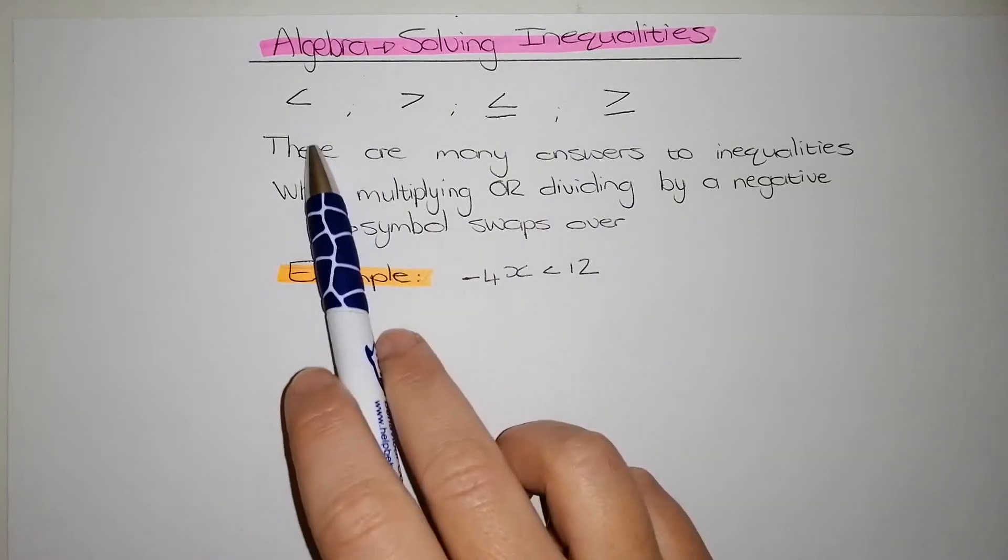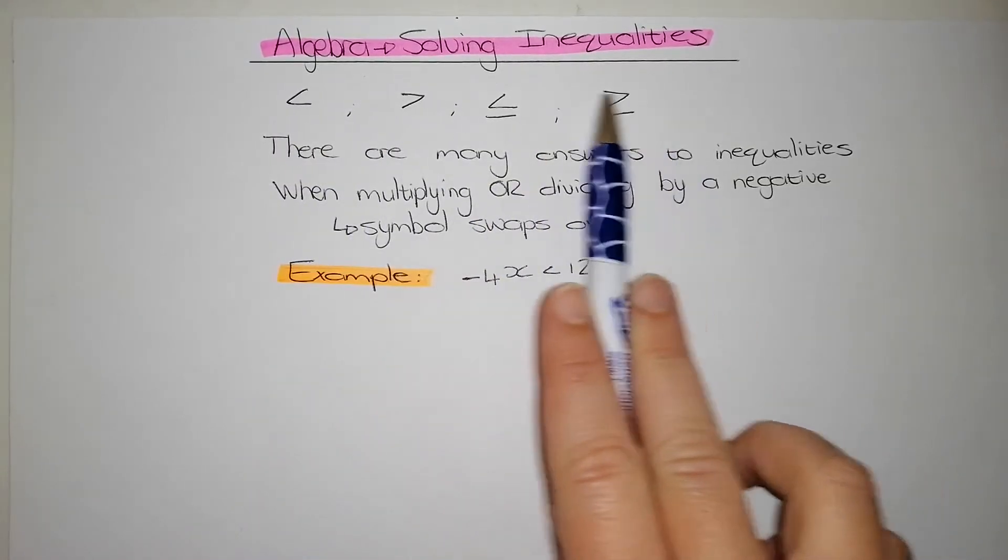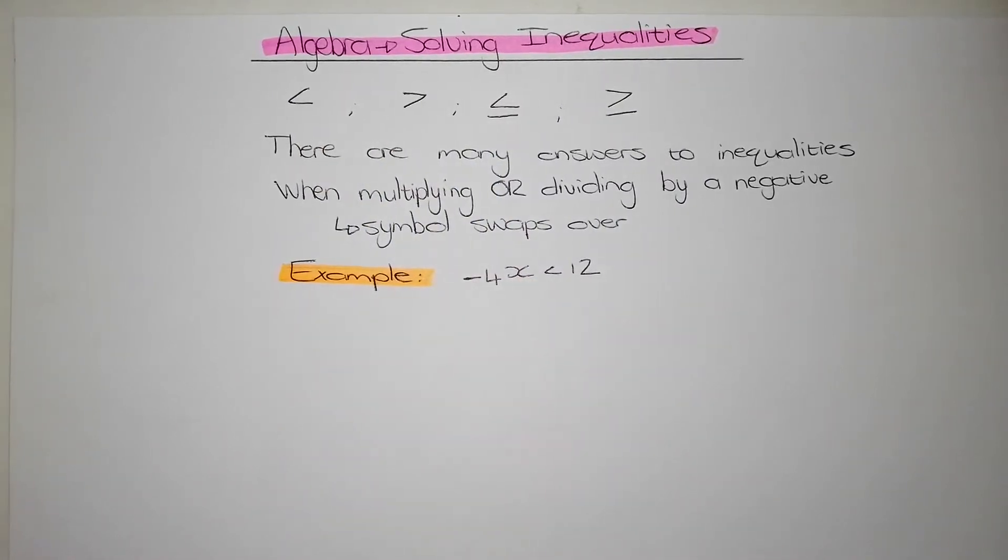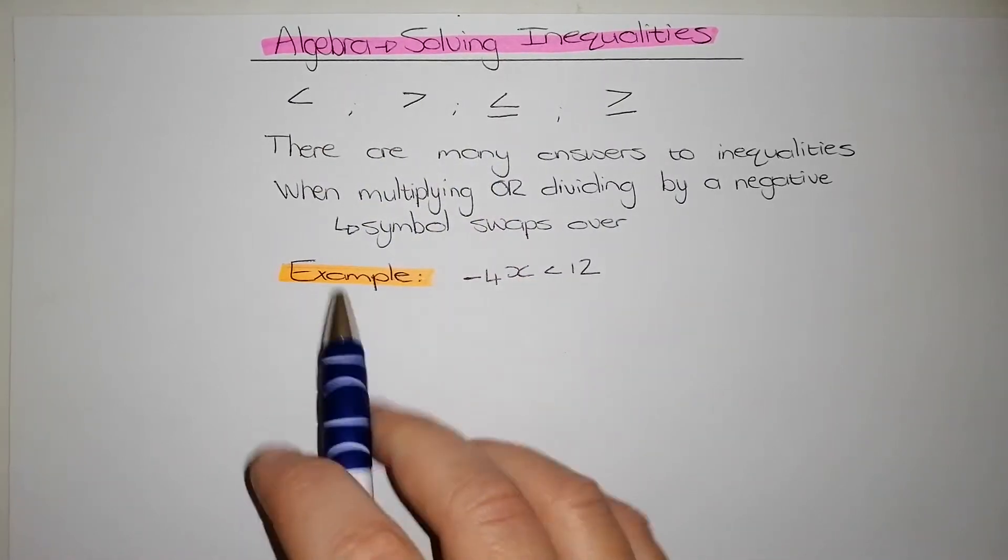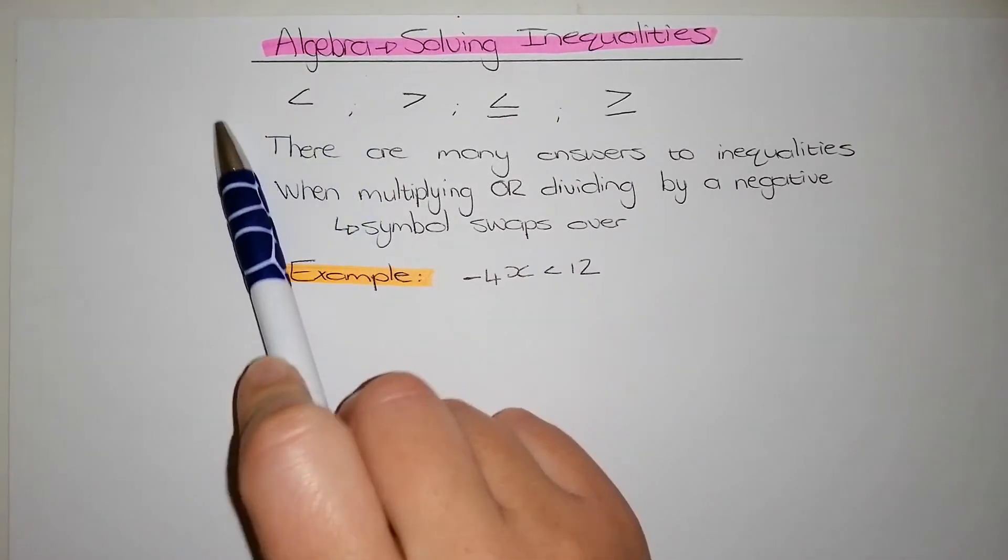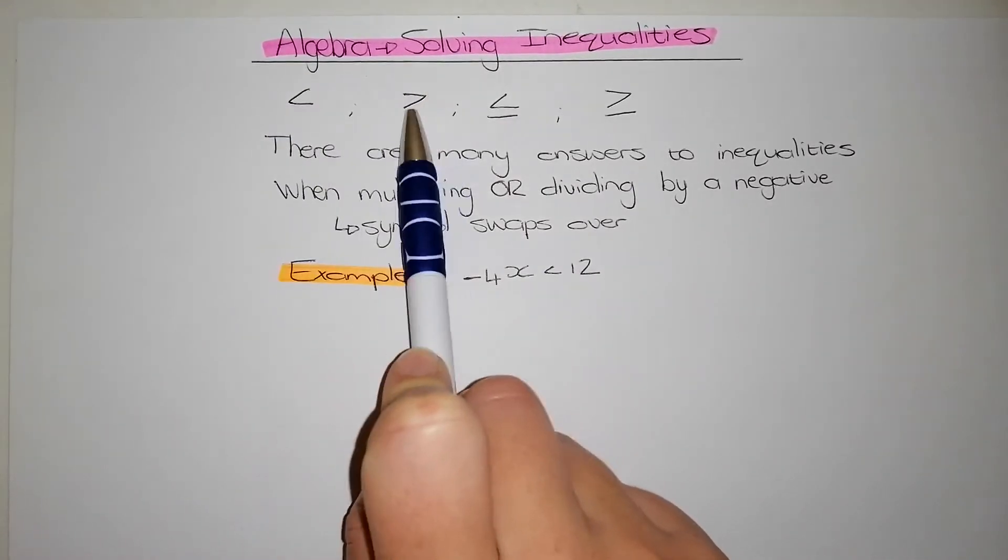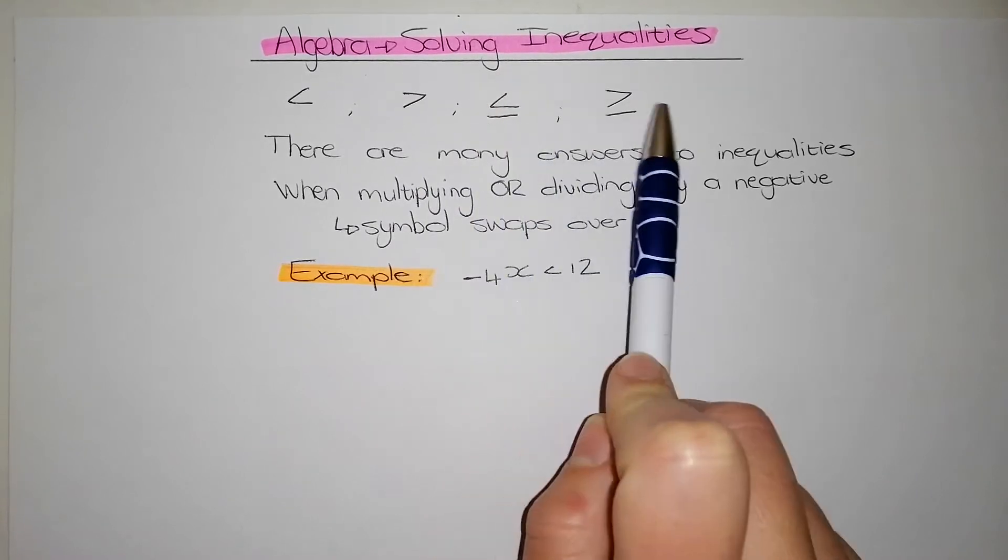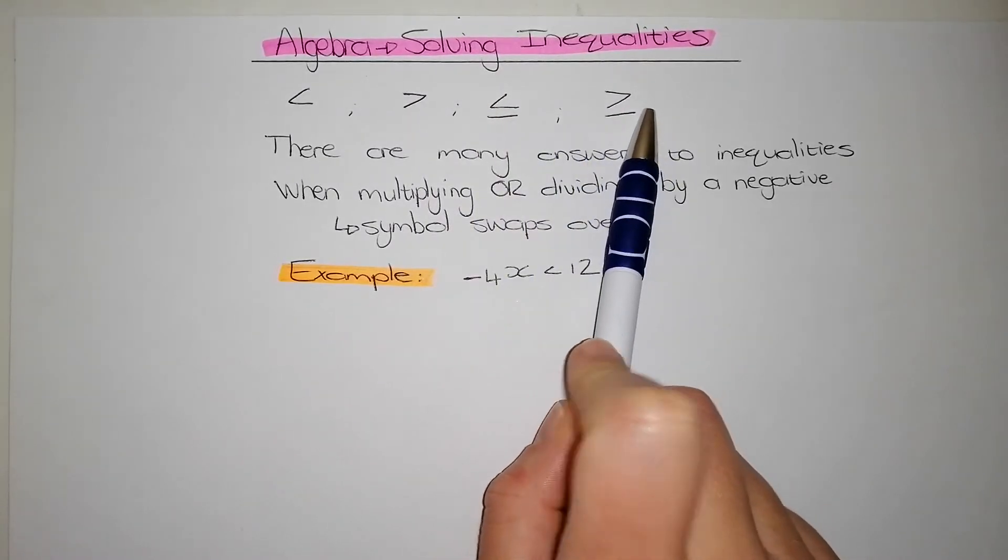When dealing with equations that has inequalities in it, we treat these inequalities as if they were equal signs. So let's go over what these inequalities mean. This one is smaller than, this one is bigger than, smaller than or equal to, and bigger than or equal to.